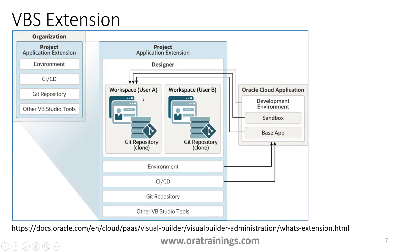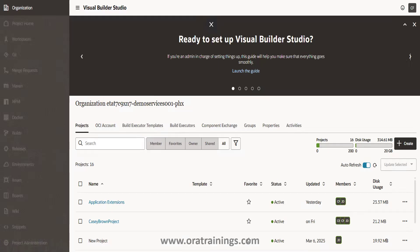On the VBS environment hierarchy: at the high level, the first component is the Organization. Under the Organization you have a Project, which is the Application Extension. This Application Extension is linked to your Fusion environment. The code you maintain within the environment is linked to your Git repository, and then deployment comes into picture. The environment is linked to your Fusion application.